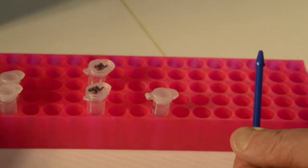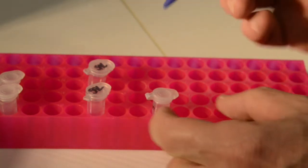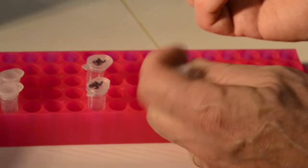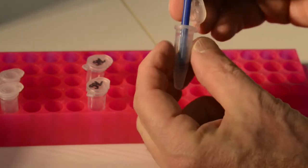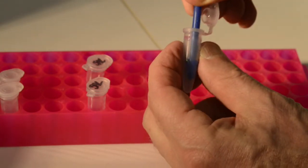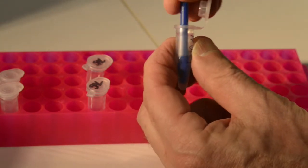We'll put it into that microfuge tube that has a bean beetle with 450 microliters of sterile saline, and we're just grinding up the beetle.